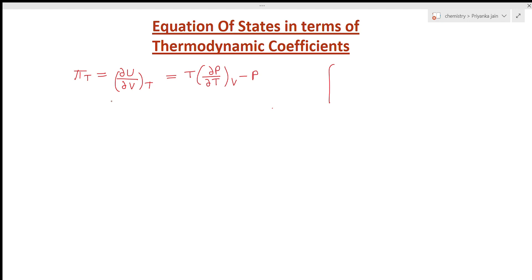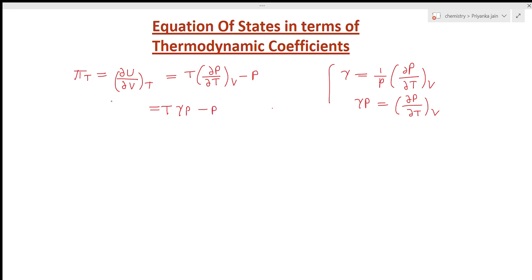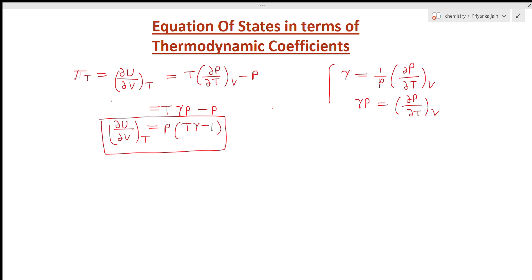We know that (∂P/∂T) at constant volume appears in the definition of gamma: gamma = (1/P)(∂P/∂T) at constant V. So we can write gamma·P = (∂P/∂T) at constant volume. Substituting into the first equation of state gives T·gamma·P minus P, and taking P common gives P(γT - 1). So (∂U/∂V) at constant temperature equals P(γT - 1). This is the first equation of state expressed with gamma.